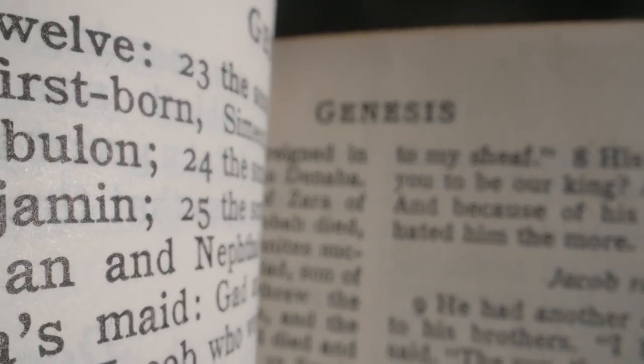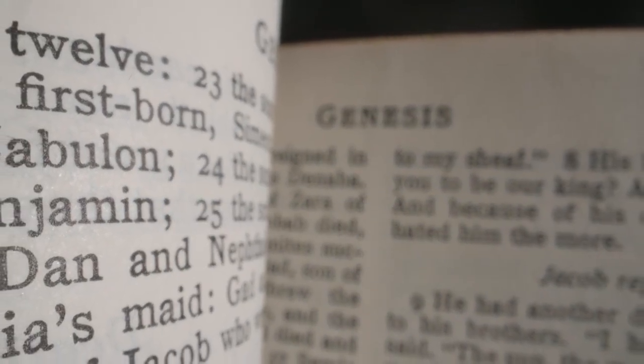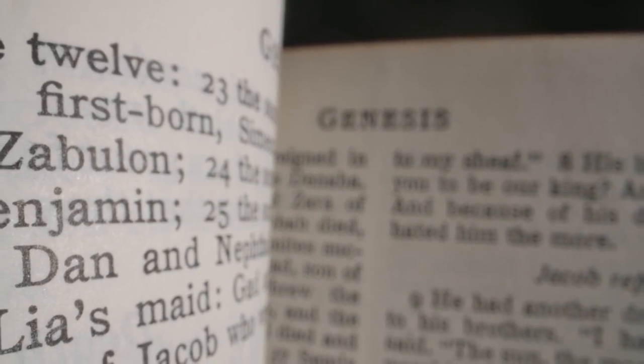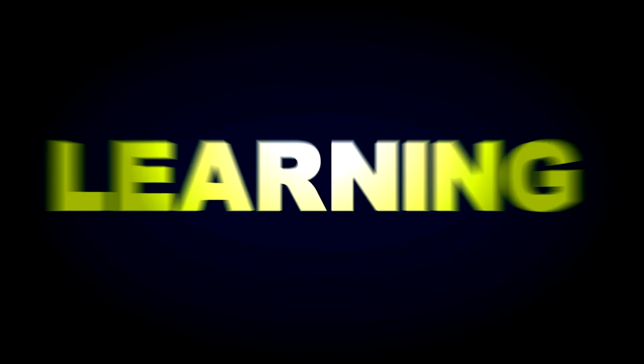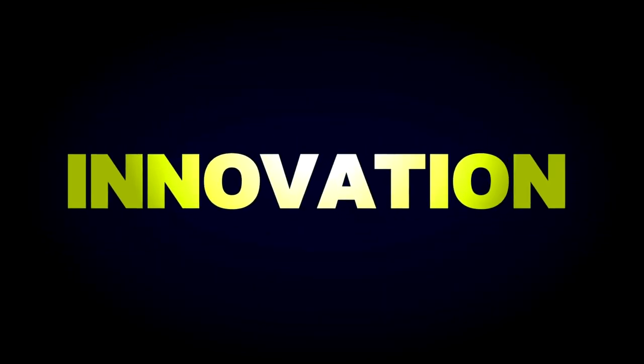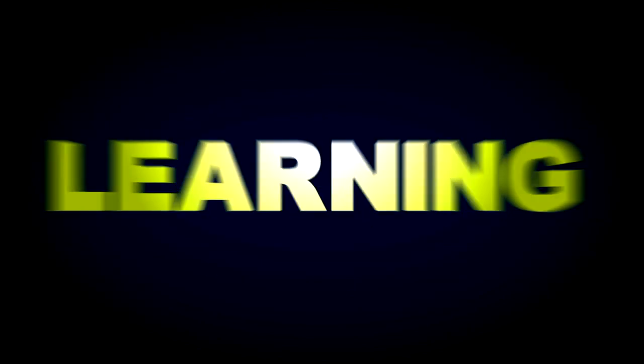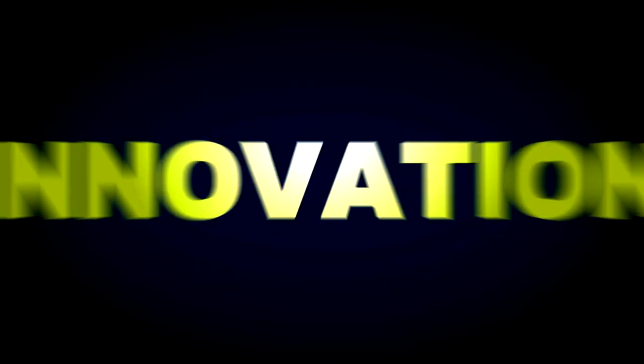However, skeptics caution against interpreting these descriptions too literally, pointing out that they may be exaggerated or symbolic in nature. They suggest that the advanced knowledge described in Sumerian texts may have been the result of human ingenuity and innovation rather than extraterrestrial intervention.